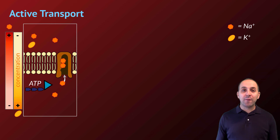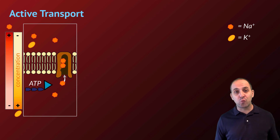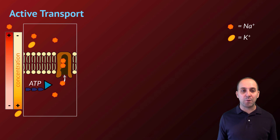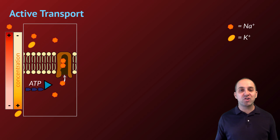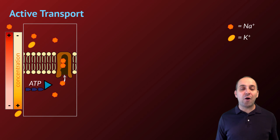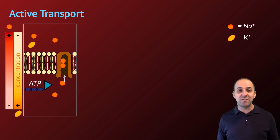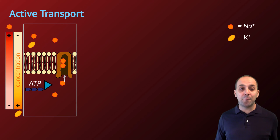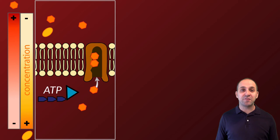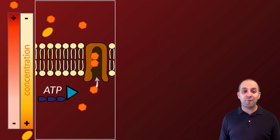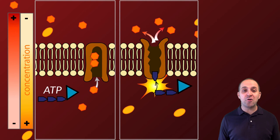Active transport is a little more complicated. We'll look at one well-researched example that plays a major role in animal nervous systems: the movement of sodium and potassium across the membrane through the action of a protein called the sodium-potassium pump. In this diagram, sodium is represented as the orange hexagons and potassium as the yellow ovals. Notice there's already a concentration gradient: more sodium is outside the cell and more potassium is inside the cell. In the first conformation of the sodium-potassium pump, it is open to the inside of the cell, and only sodium ions can bind to it. Once sodium binds, energy from ATP is used, causing a conformational change in the protein.